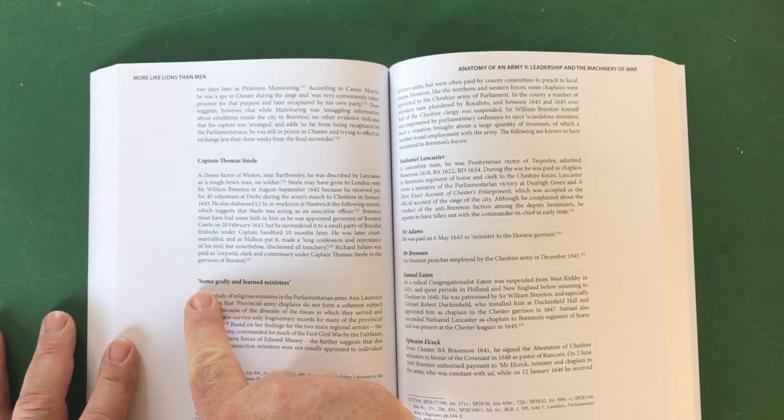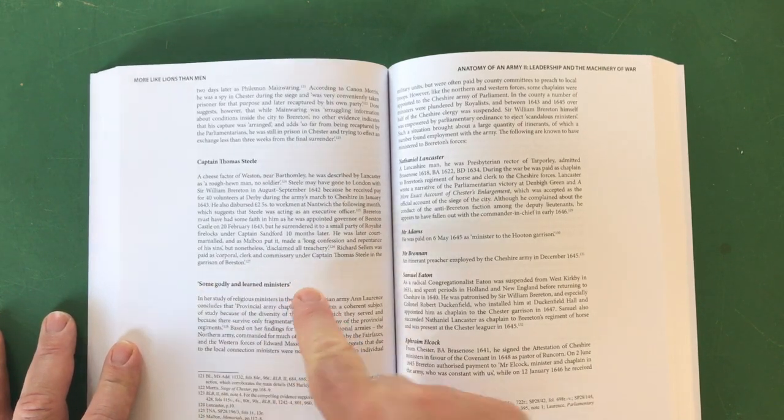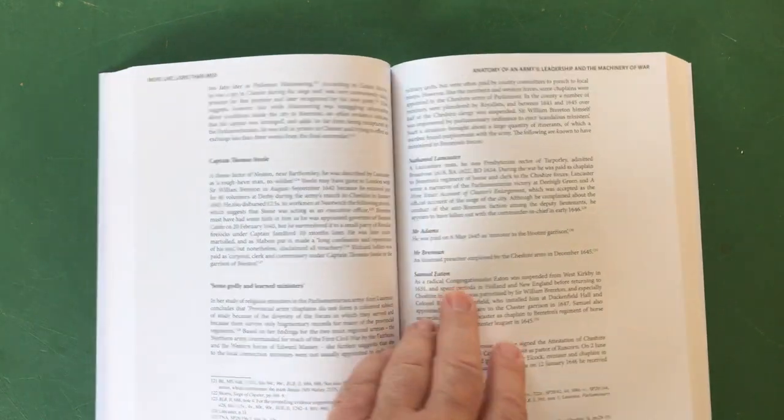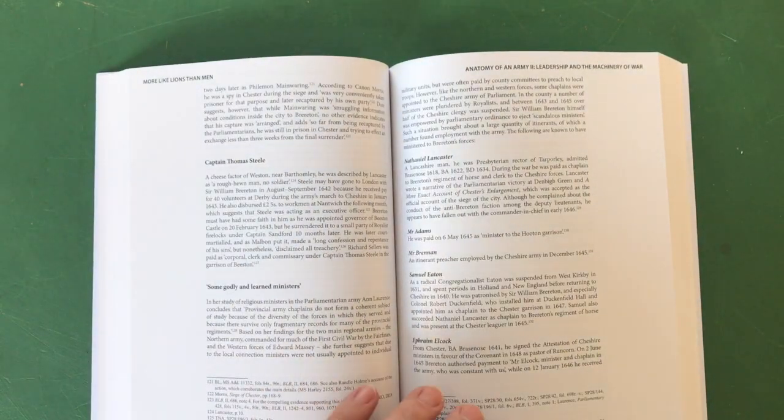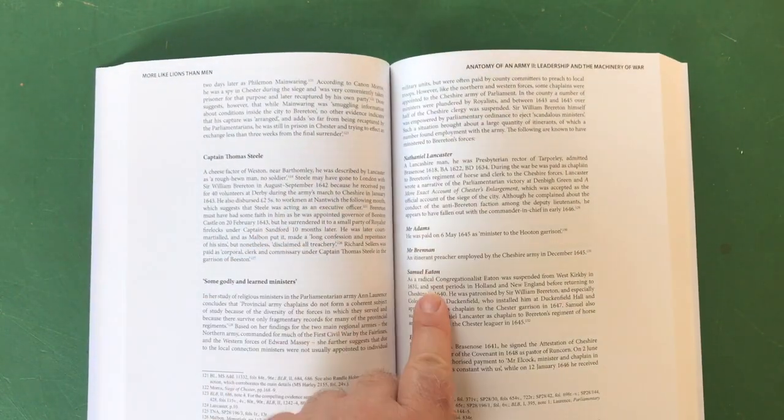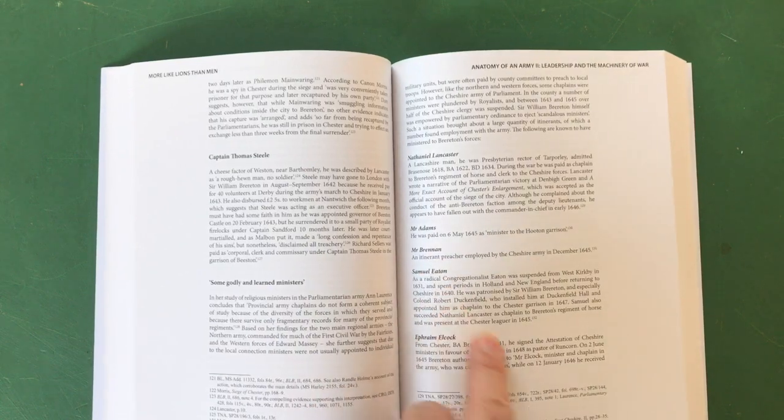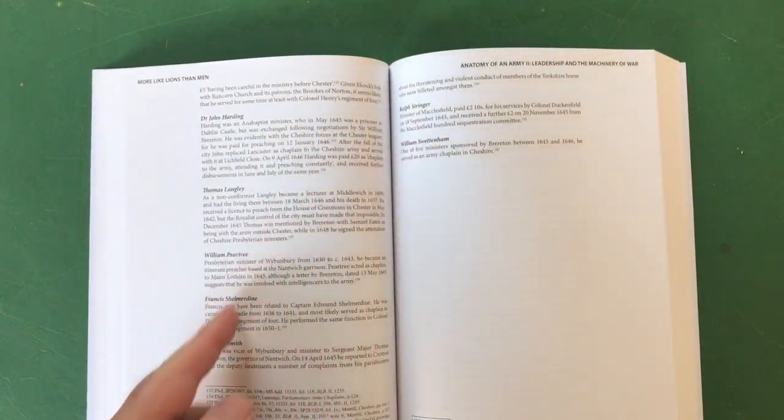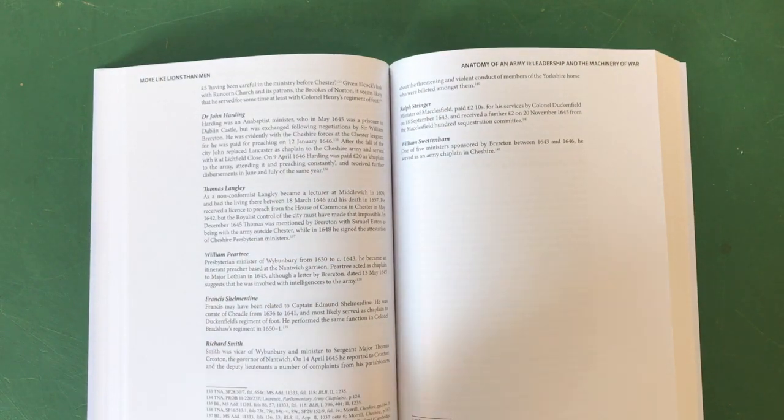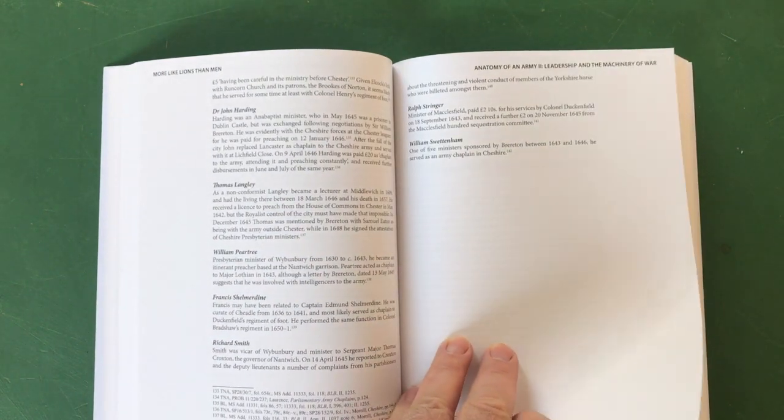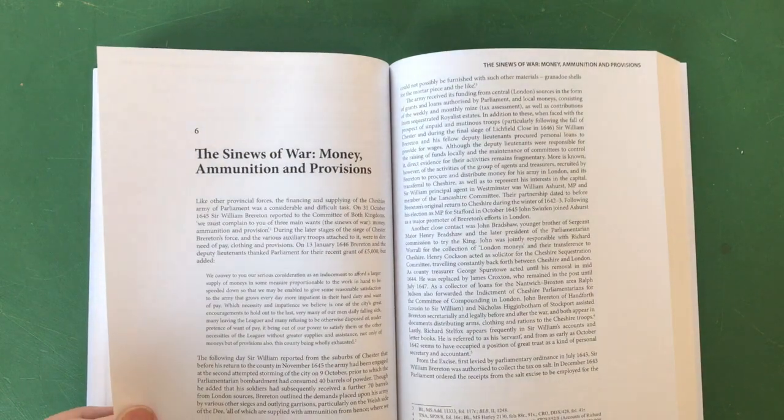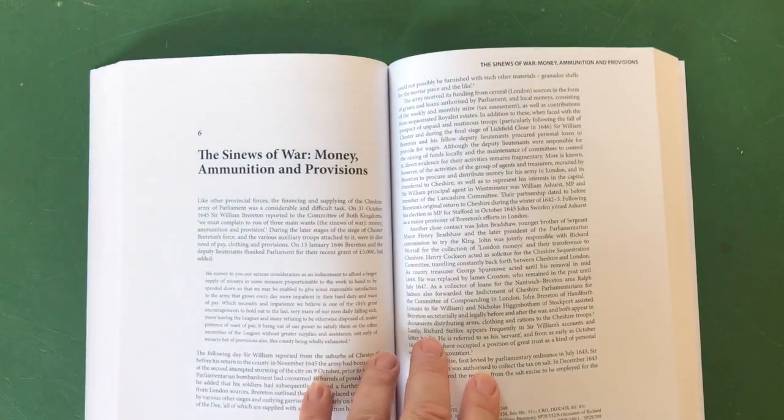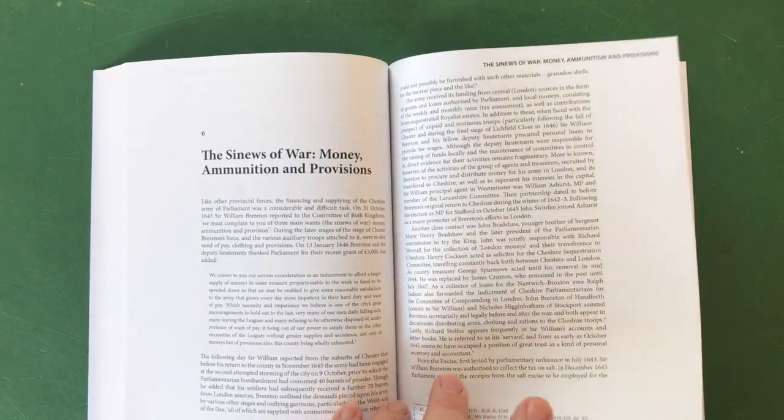They're thinking about the army's spiritual well-being as well: some godly and learned ministers. And here they are again, this kind of detail is fantastic: Nathaniel Lancaster, Mr. Adams, Mr. Brennan, Samuel Elite and Ephraim Elcock and on it goes. All these people, ministers to look after the spiritual well-being of the men. The sinews of all: money, ammunition and provisions.